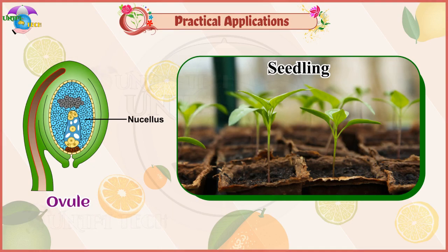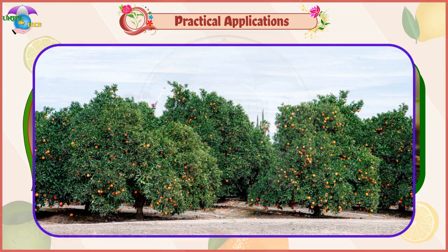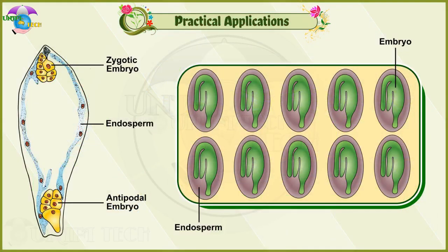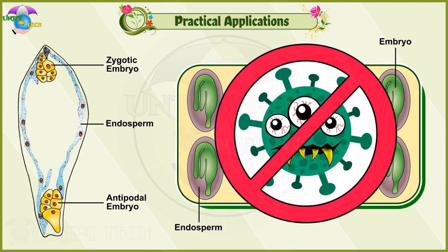Practical Applications: The seedlings formed from the nucellar tissue in Citrus are found to be better clones for orchards. Embryos derived through polyembryony are found to be virus-free.